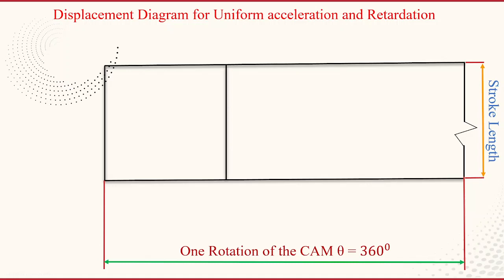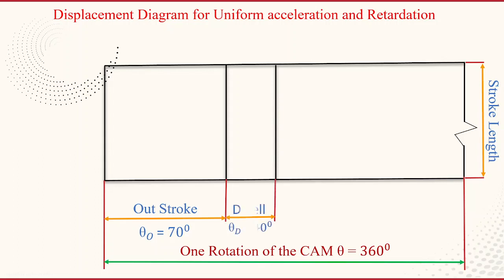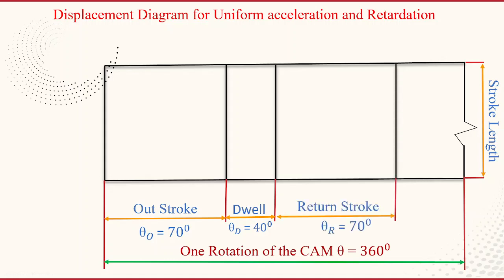First, mark the outstroke — the angle of cam rotation is 70 degrees. Then the dwell angle is 40 degrees, followed by the return stroke of 70 degrees, and the remaining 180 degrees for the final dwell period. This accounts for one complete rotation of the cam.